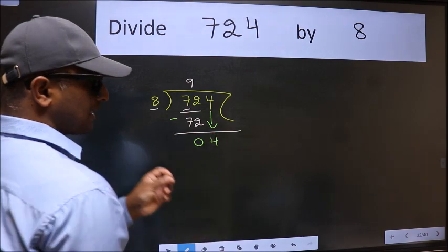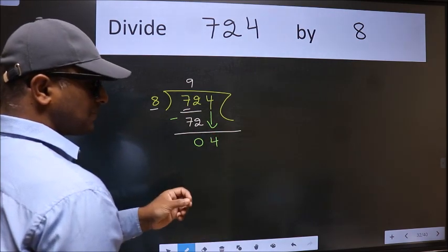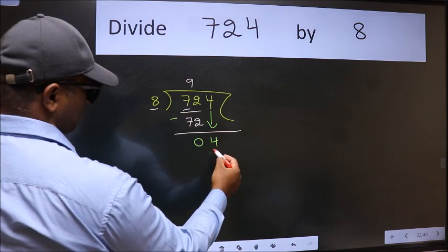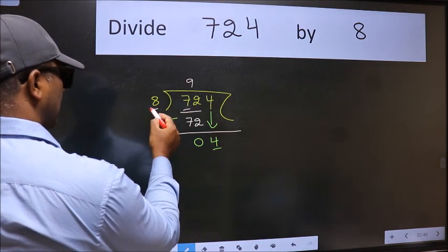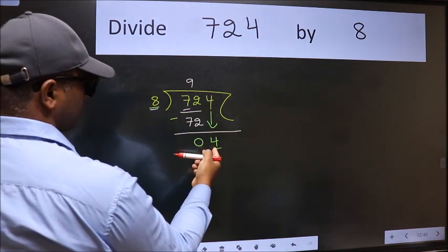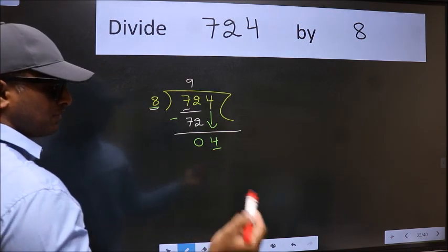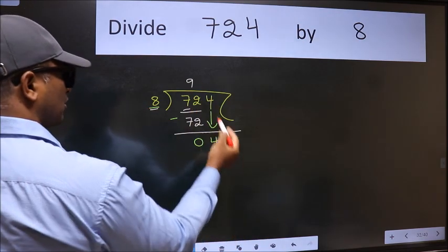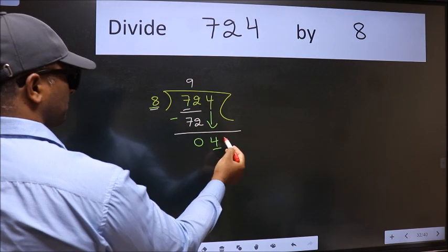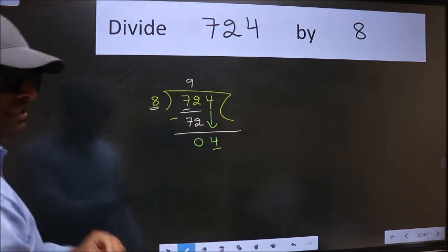After this step, the mistake happens. And the mistake is this: here we have 4 and here 8. 4 is smaller than 8, so what many do is they directly put dot, take 0, which is wrong.